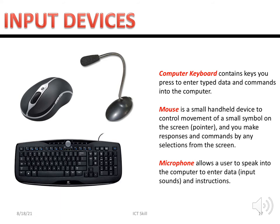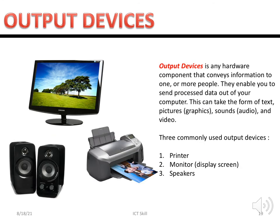After receiving input from the user, the computer processes the data and then delivers the output. We then go to the output device — hardware components that convey information to people, enabling you to send processed data out of your computer. Examples include a monitor, printer, and speaker. For instance, when you use a microphone, the output comes from the speaker — you can hear your voice, songs, or speech.